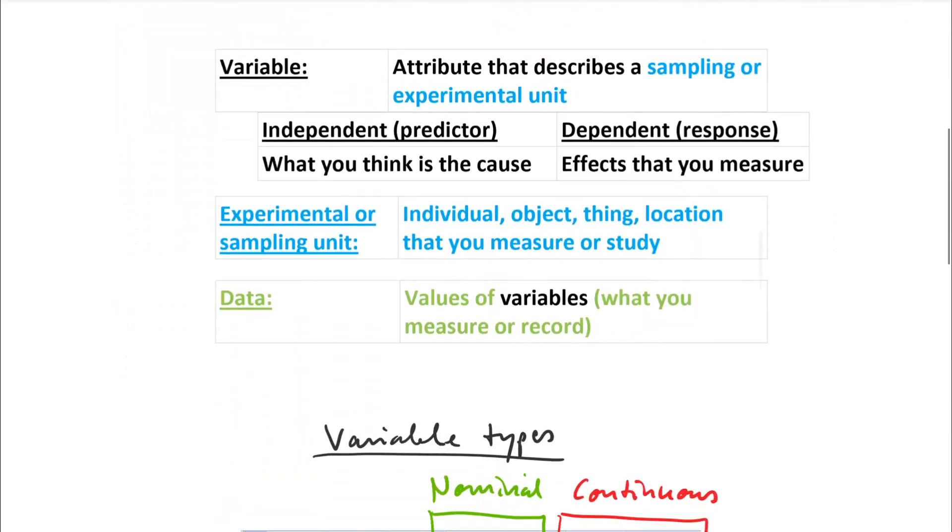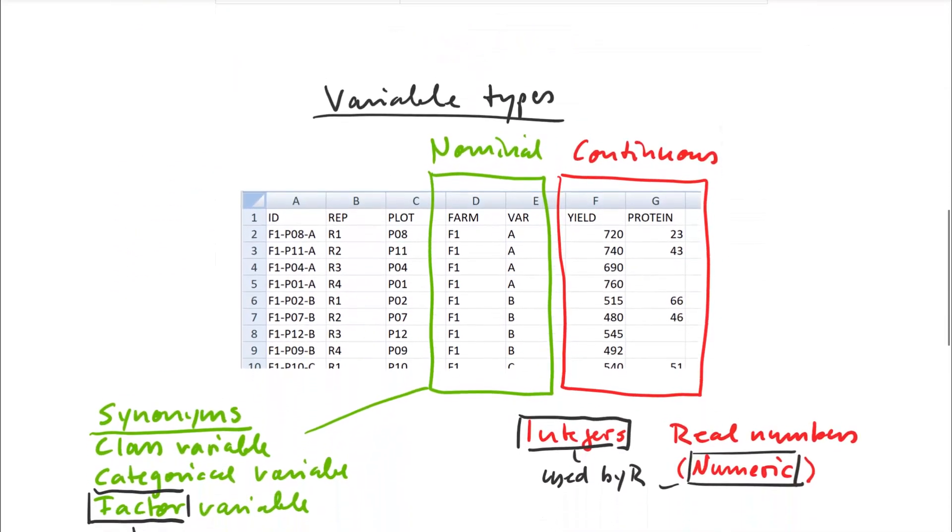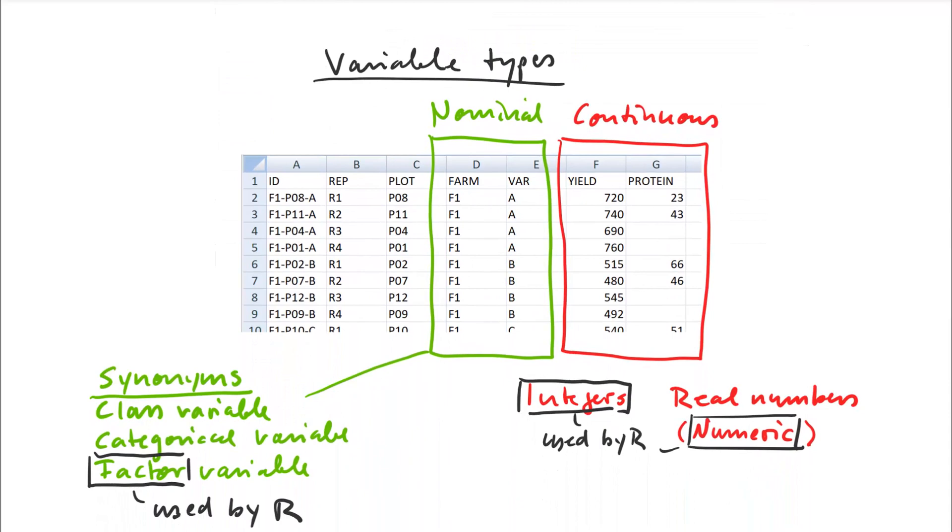And the last thing I want to do is talk about variable types. So in this particular case, our independent variables are nominal variables, so they have a name. You can also use synonyms class variable or categorical variable or factor variable. Factor variable is used in R. And you normally have continuous variables as well, so those are numbers.